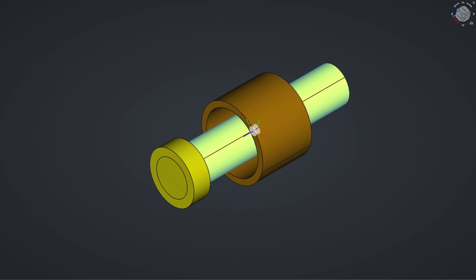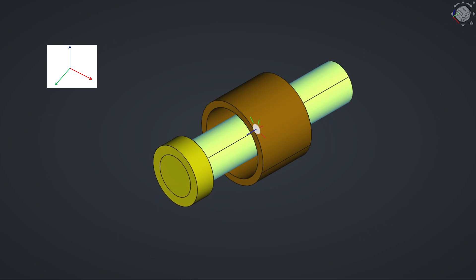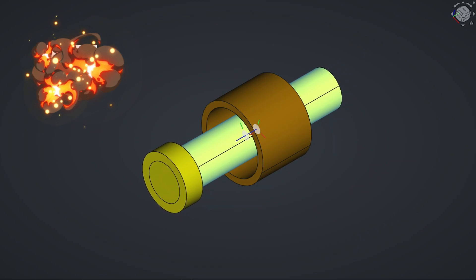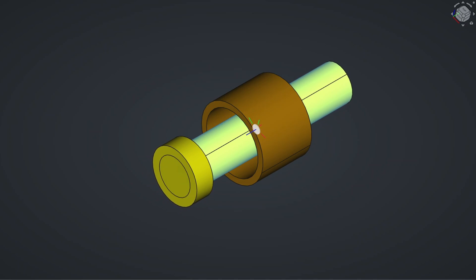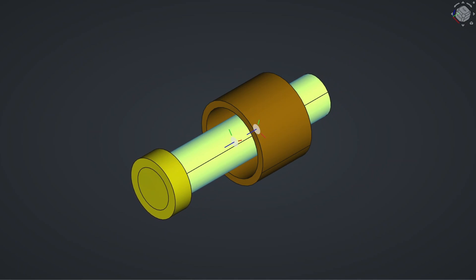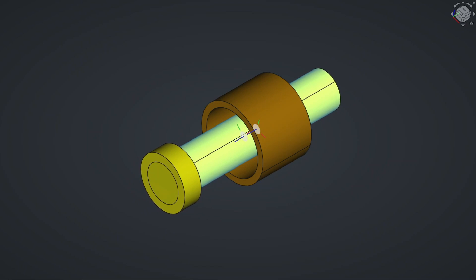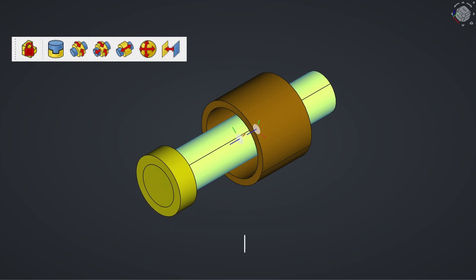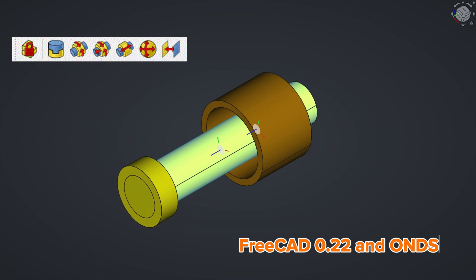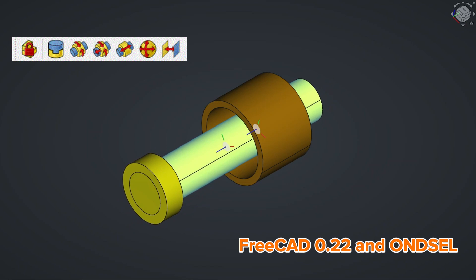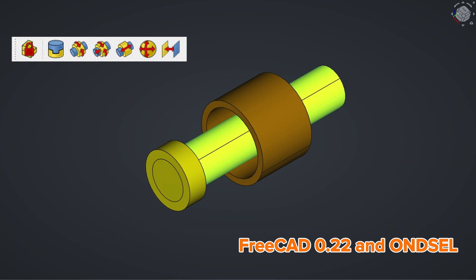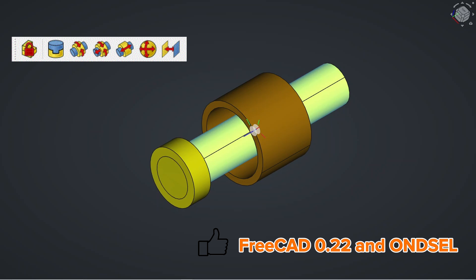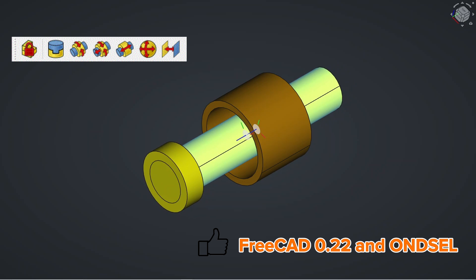How do we create this joint without any local coordinate system? Hello my friends, I am Kadzis and welcome to another FreeCAD tutorial. Today we are going to learn about this game-changing FreeCAD assembly workbench in upcoming FreeCAD version 0.22 and OnSell. FreeCAD is going to use the open source OnSell solver as the new built-in assembly workflow.